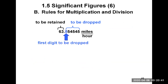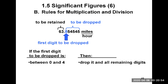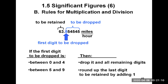The 6 and the 3 are the two digits to be retained. The 8 is the first digit to be dropped, and because 8 is above 5, we round up. If the first digit to be dropped is between 0 and 4, we round down and just drop all the digits. If the first digit is between 5 and 9, you round up the last retained digit by adding 1 to it.